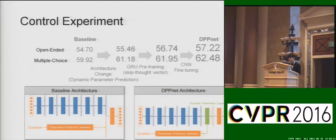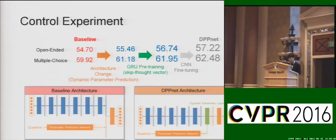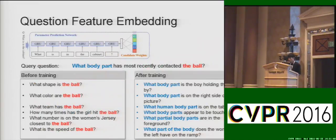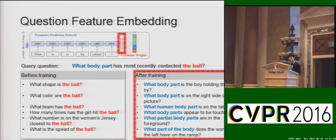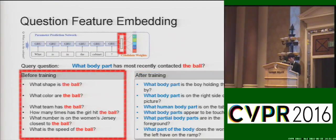To illustrate the effectiveness of the proposed algorithm, we performed several ablation experiments. A simple baseline uses a single fully connected layer on top of concatenated image and question features. By using the dynamic parameter prediction architecture alone, we obtain better performance. Performance is further improved by initializing the GRU with the pre-trained skip-thought vector, and the best performance is achieved by fine-tuning the CNN with the proposed training strategy. To understand question feature embedding, we extract features from a query question and retrieve the nearest questions before and after training. After training, retrieved questions tend to encode more similar recognition problems to the query, while before training they only share simple word occurrences.